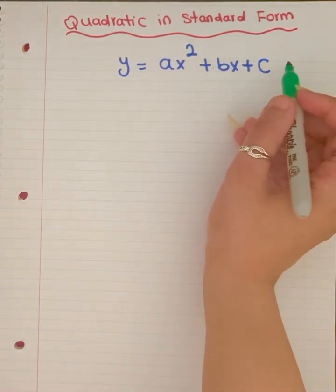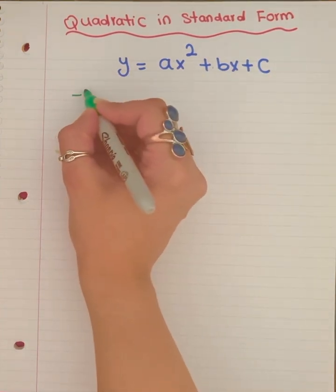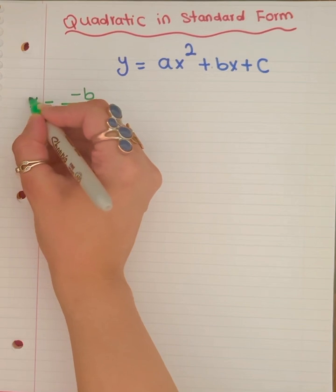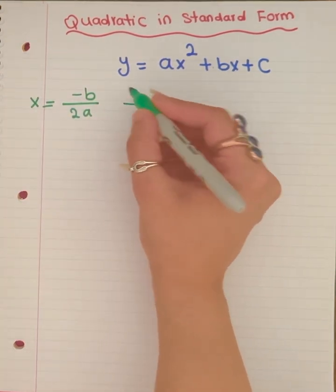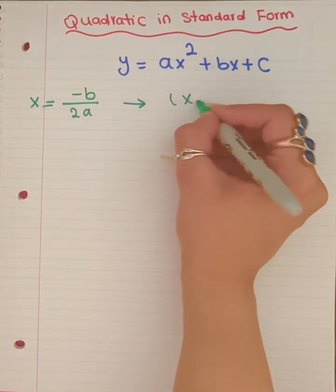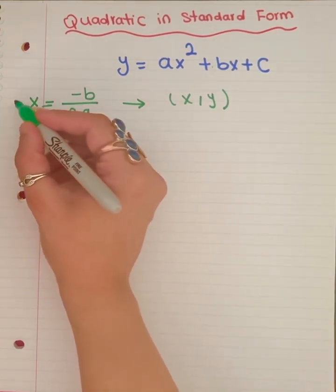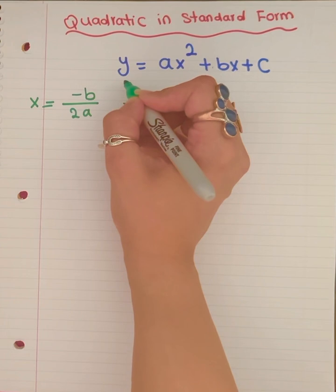And in order to find the vertex, it's going to be using this format: negative b over 2a equals x. Because our vertex in the standard form is x and y. So first you need to find your x, and then you need to plug this into the original format in order to find y.